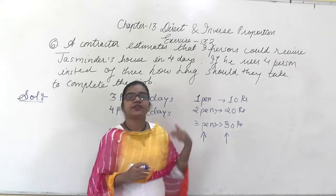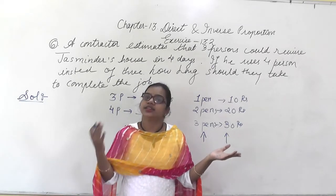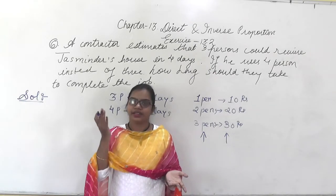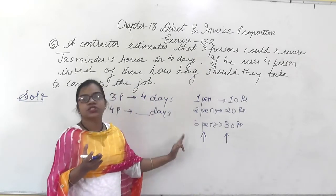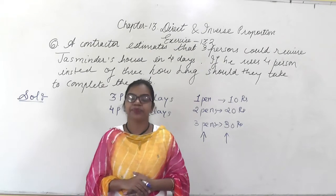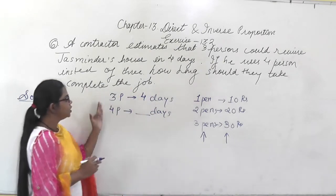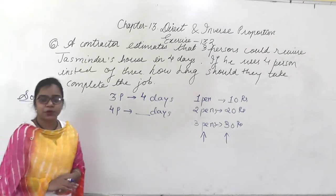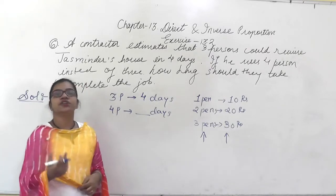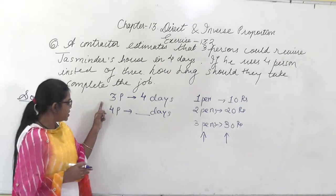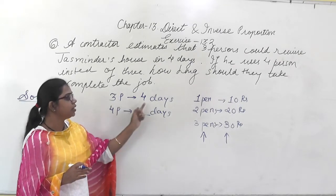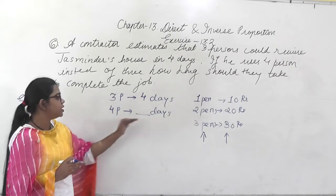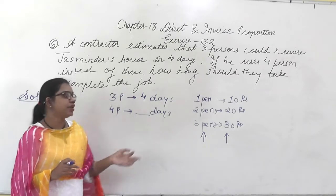In direct proportion, if one is increasing the other will also increase, or if one is decreasing the other will also decrease. The vice versa happens in inverse proportion — in inverse proportion, if one is increasing, the other will decrease. From here we have to check whether the question is in direct proportion or inverse proportion. So here, 3 persons complete the job in 4 days, and 4 persons will complete it in how many days?